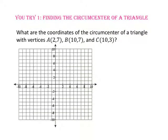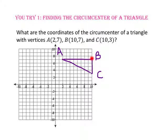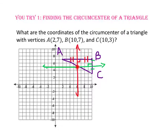What are the coordinates of the circumcenter of a triangle with vertices A at (2,-7), B at (10,-7), and C at (10,-3)? Let's start by connecting the points to create our triangle. Since segment AB is a horizontal line, the perpendicular bisector will be vertical through the midpoint of that segment. Since segment AB is eight units long, we want to be four units from each endpoint, which is the line x equals 6. Since segment BC is vertical, the perpendicular bisector will be horizontal through the midpoint of segment BC, which is the line y equals -5. Since the circumcenter is the point of concurrency of the perpendicular bisectors, this point is our circumcenter at (6, -5).